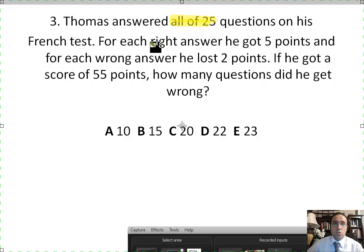For each right answer, he got five points. And for each wrong answer, he lost two points. His total score was 55 points. How many questions did he get wrong?